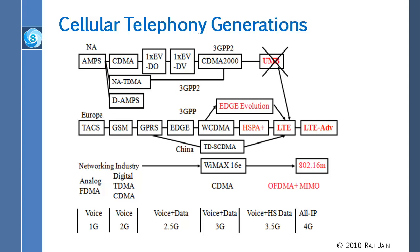On the way to 4G we have 3.5G, which is what we have today. Previously there were only two telephony groups — North American 3GPP2 and European 3GPP — but now a third networking industry group including Cisco and Intel has emerged. They have their own data standard called WiMAX, which has been officially recognized by ITU as a 3G technology, which is important because many countries reserve spectrum for 3G only.